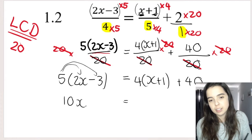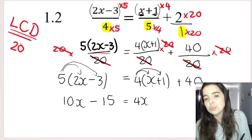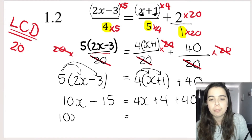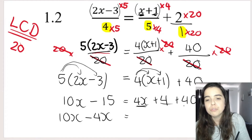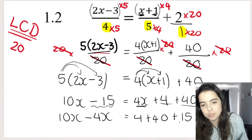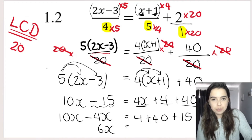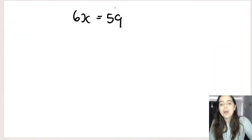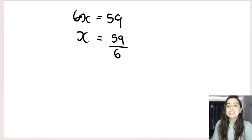5 times 2x is 10x. 5 times negative 3 is negative 15. 4 times x is 4x. 4 times 1 is positive 4. Carry down the plus 40. Then get all x's to one side: 10x stays, positive 4x goes over and becomes negative 4x. The positive 4 and positive 40 stay; negative 15 goes over and becomes positive 15. Adding like terms: 10x minus 4x is 6x, and 4 plus 40 plus 15 is 59. Last step: x is being multiplied by 6, so divide by 6. That is the simplest form of that fraction.